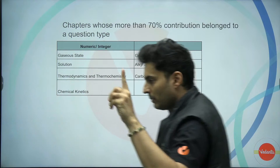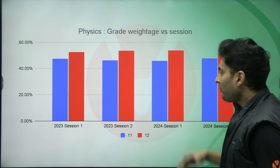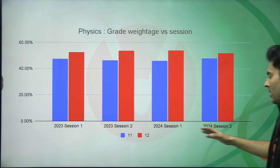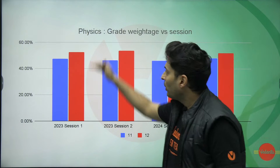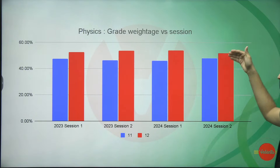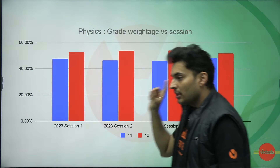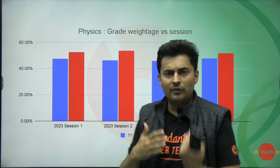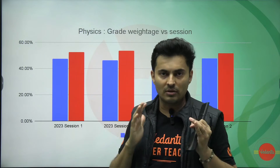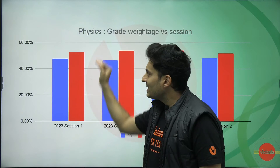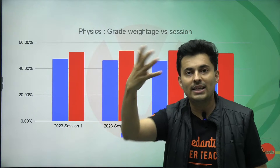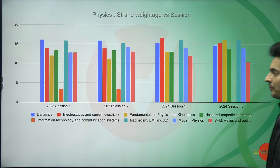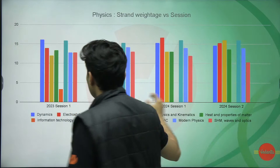Moving on to physics. Looking at the 11th vs 12th gap in the January and April attempts of 2023 and 2024, again 12th has a higher contribution compared to 11th. However, the gap is not very different between session one and session two in physics — unlike chemistry. So you cannot say that in the first attempt one portion will be asked more. There is still a slightly higher bias for 12th standard content in physics.